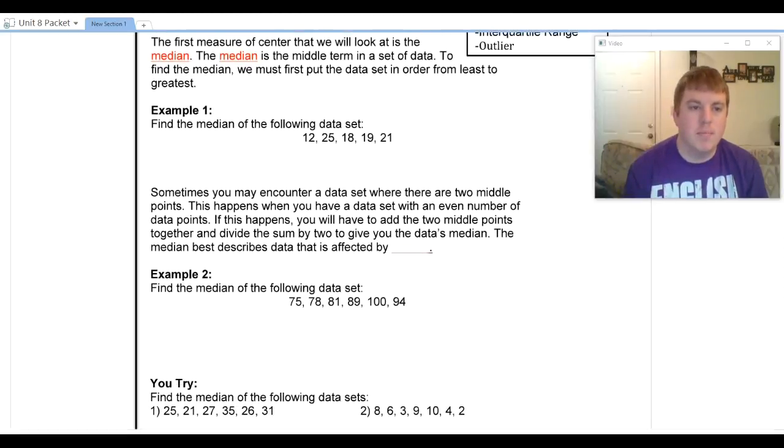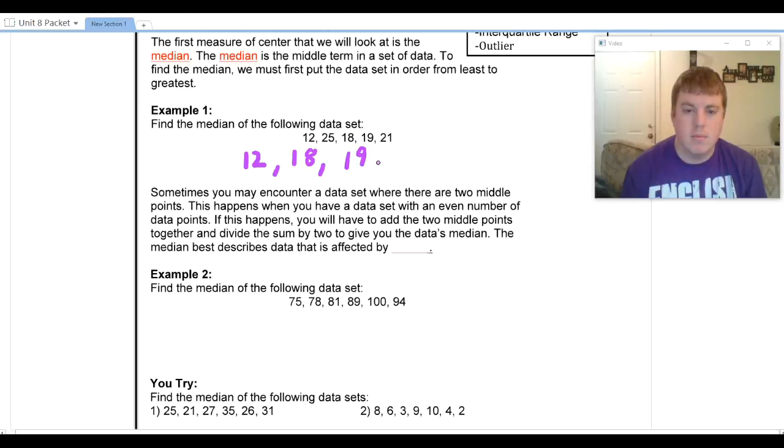So if I'm going to look at example 1, I am going to, before I do anything else, put these numbers in order from least to greatest. So my smallest number is 12, and then I'm going to have 18, 19, 21, and 25.